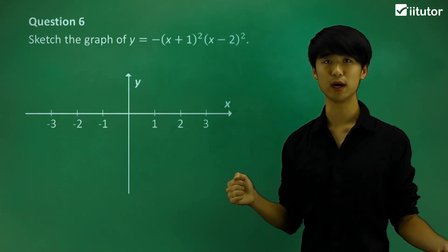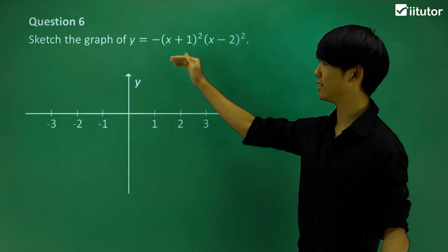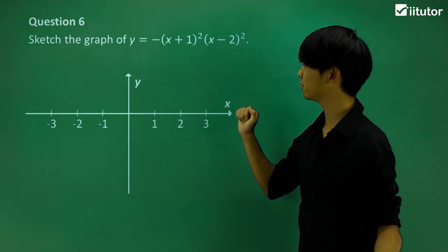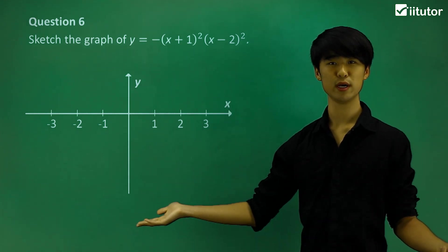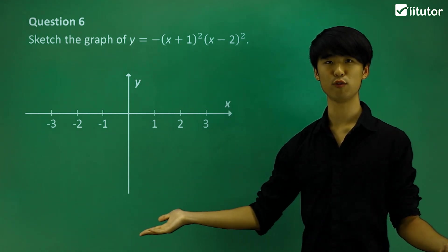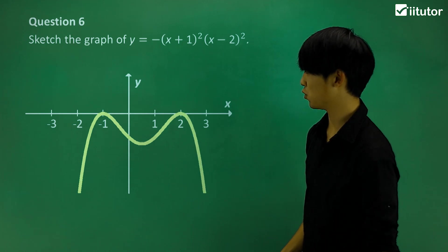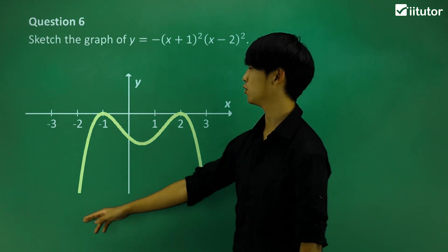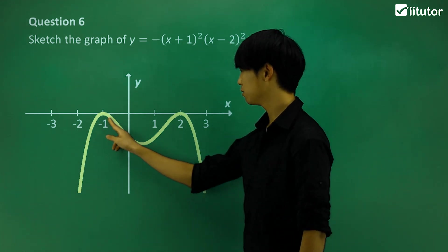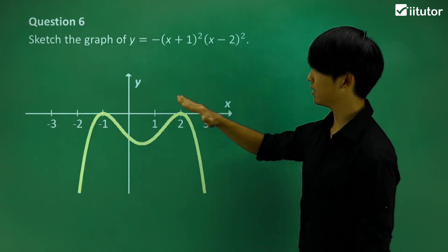Looking at the next one, we again have two double roots, but it's a negative graph. The two double roots are at x equals negative 1 and x equals positive 2. The graph bounces off at both those points, and because it's negative, the quartic is flipped.